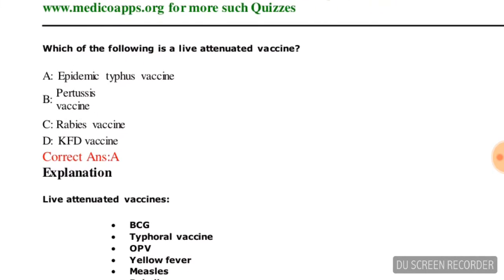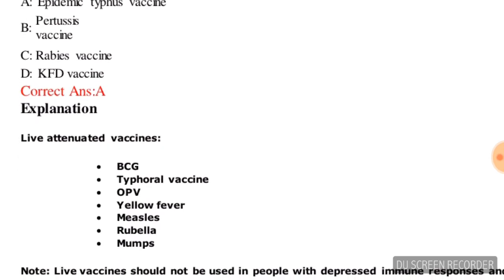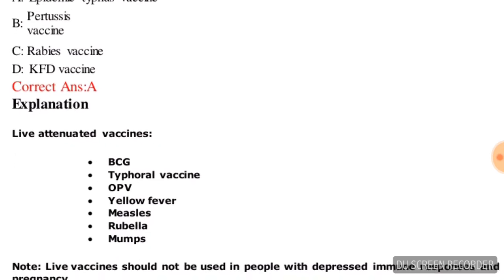Next question: which of the following is a live attenuated vaccine? Options are: epidemic typhus vaccine, Y2C vaccine, rabies vaccine, or KFD vaccine. The correct answer is epidemic typhus vaccine. Other live attenuated vaccines are also listed on screen.